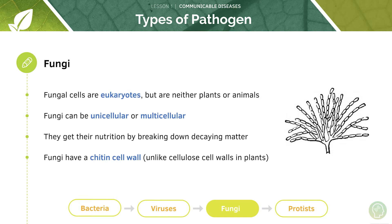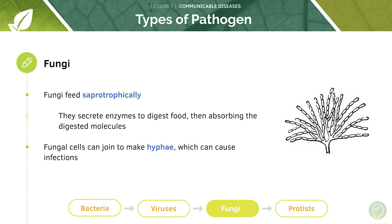Fungi, in contrast to bacteria, are eukaryotes, and fungi can be unicellular or multicellular — an example of a unicellular fungus would be yeast, and multicellular would be a mushroom. Fungi get their nutrition by breaking down decaying matter, and they have a chitin cell wall — so their cell wall is not formed of cellulose like plant cells, but instead from a molecule called chitin.